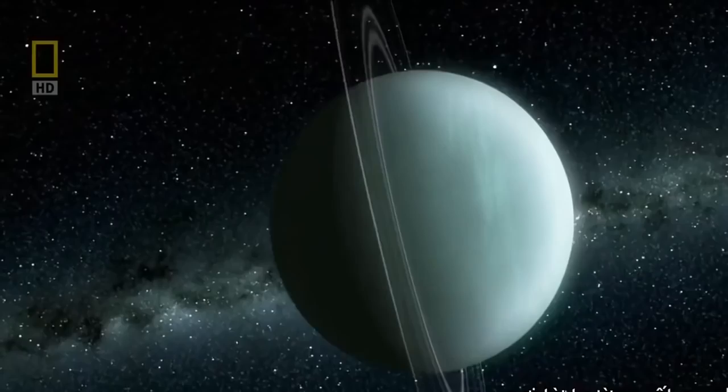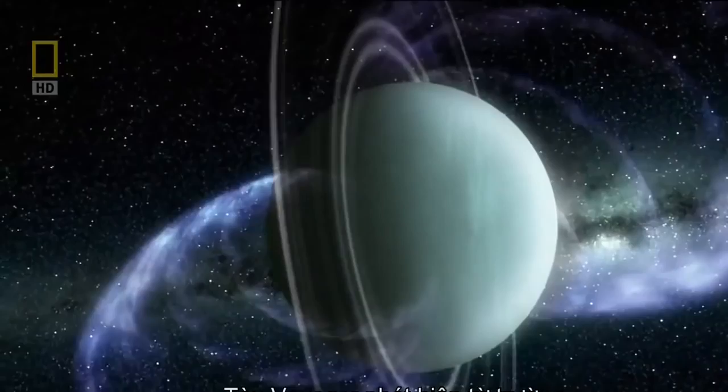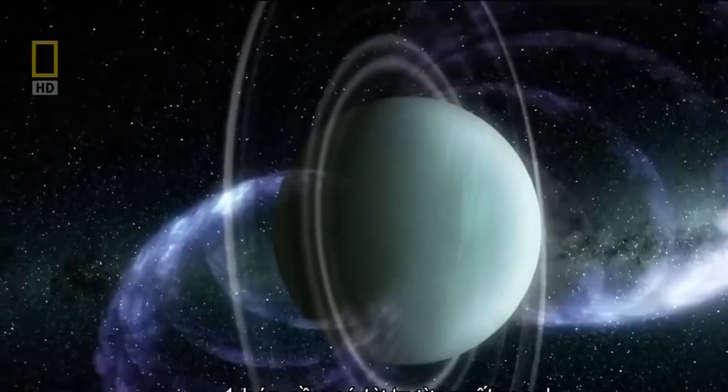Voyager discovers that Uranus's magnetic field is wildly off-kilter. You have one hemisphere with very strong magnetic fields, stronger than the Earth's magnetic field. You have another hemisphere, the one pointed towards the Sun, with very weak magnetic fields.